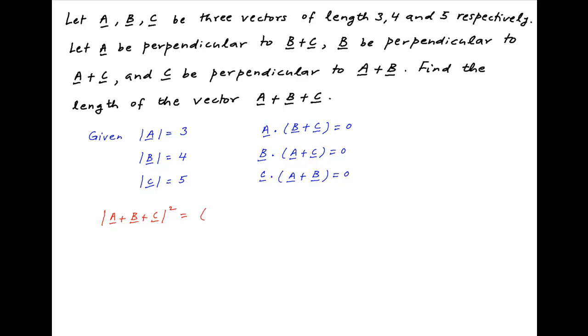Now the square of the absolute value of vector a plus b plus c can be written as the dot product of vector a plus b plus c with itself.